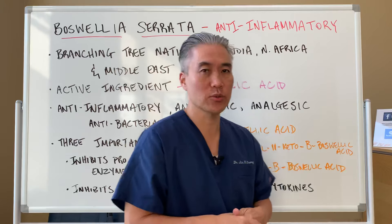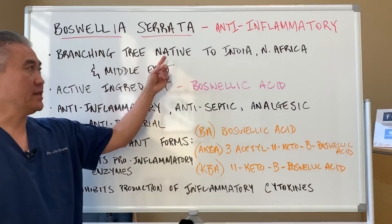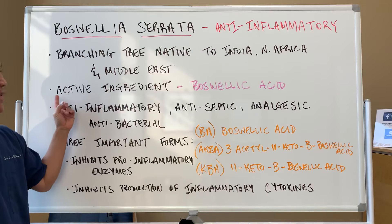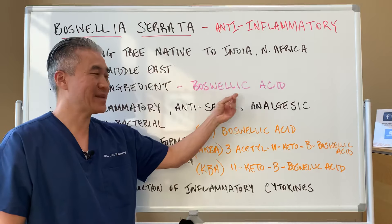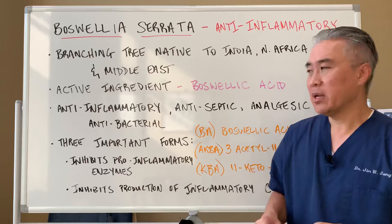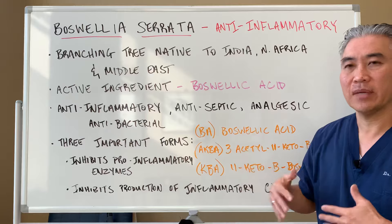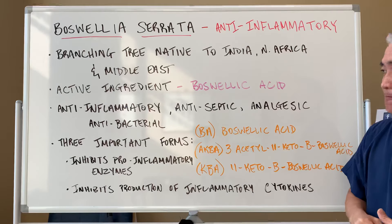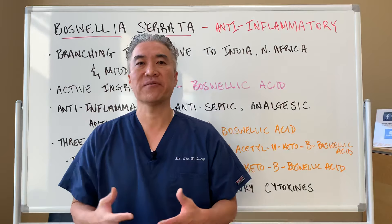Let's get right into what it is. It's a branching tree native to India, North Africa, and the Middle East. The active ingredient in Boswellia is boswellic acid. Basically what it does is anti-inflammatory, antiseptic, antimicrobial, and analgesic. So it has profound effects on things that are inflammatory.